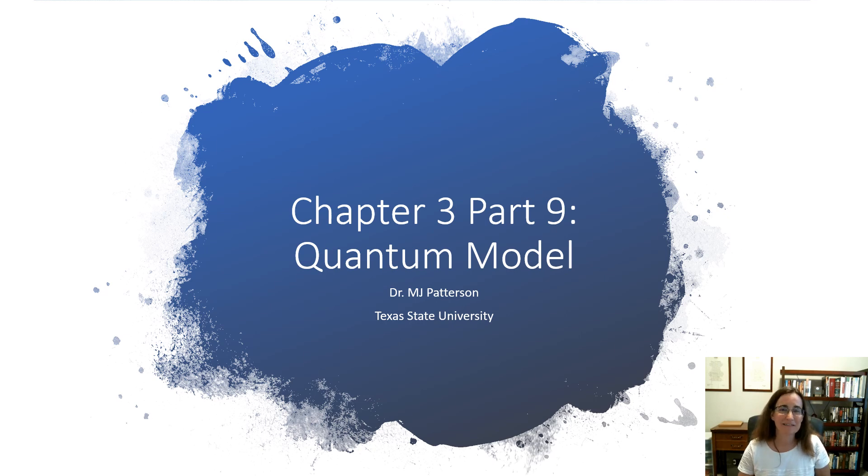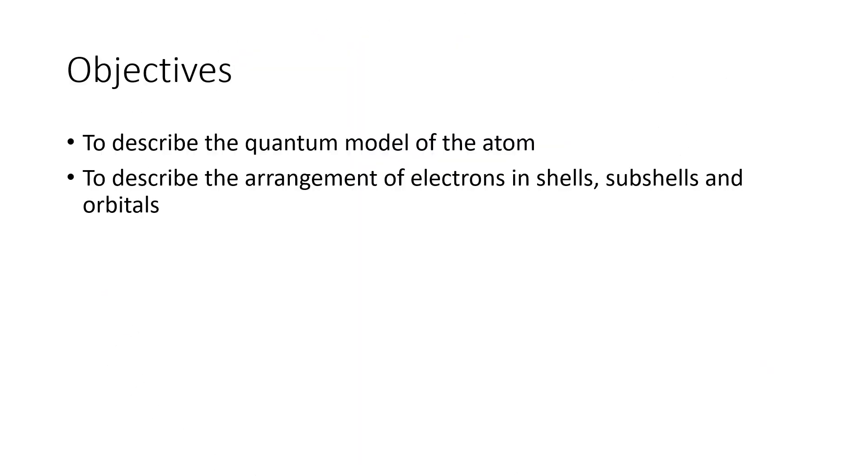Hi Bobcats, let's take a look at our best modern model of the atom, which is known as the quantum model. Our first objective is to describe the quantum model, and then our second one is to describe how electrons get arranged in shells, subshells, and orbitals.